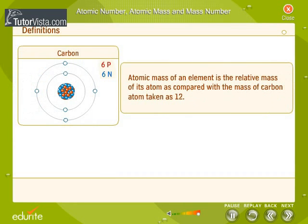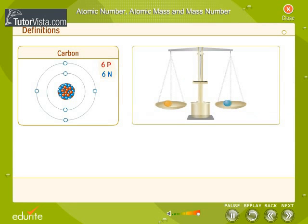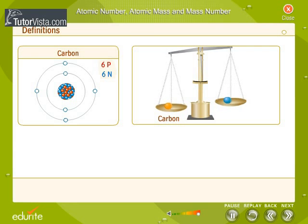By definition, atomic mass of an element is the relative mass of its atom as compared with the mass of the carbon atom. The mass of a carbon atom is taken as 12. One atom of carbon-12 has a mass of 12 amu.